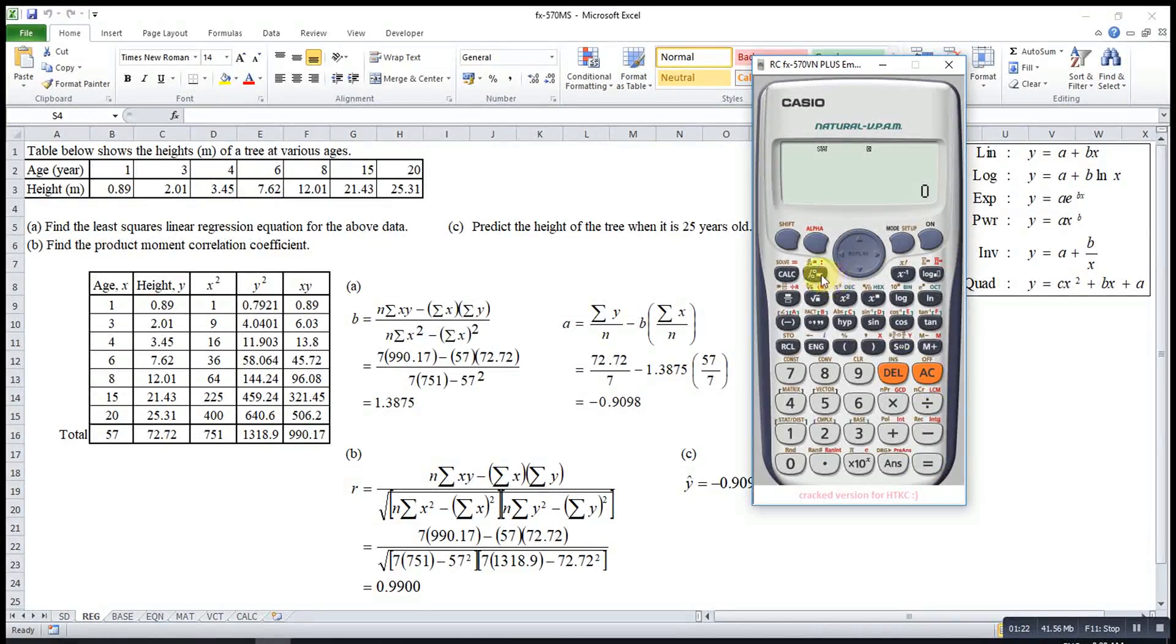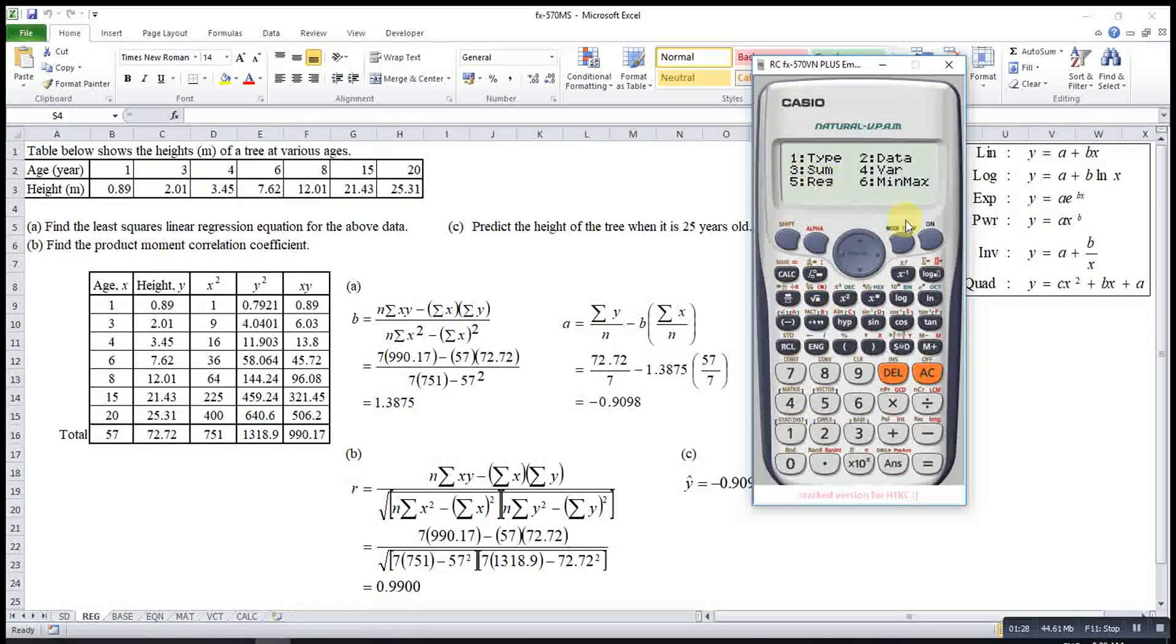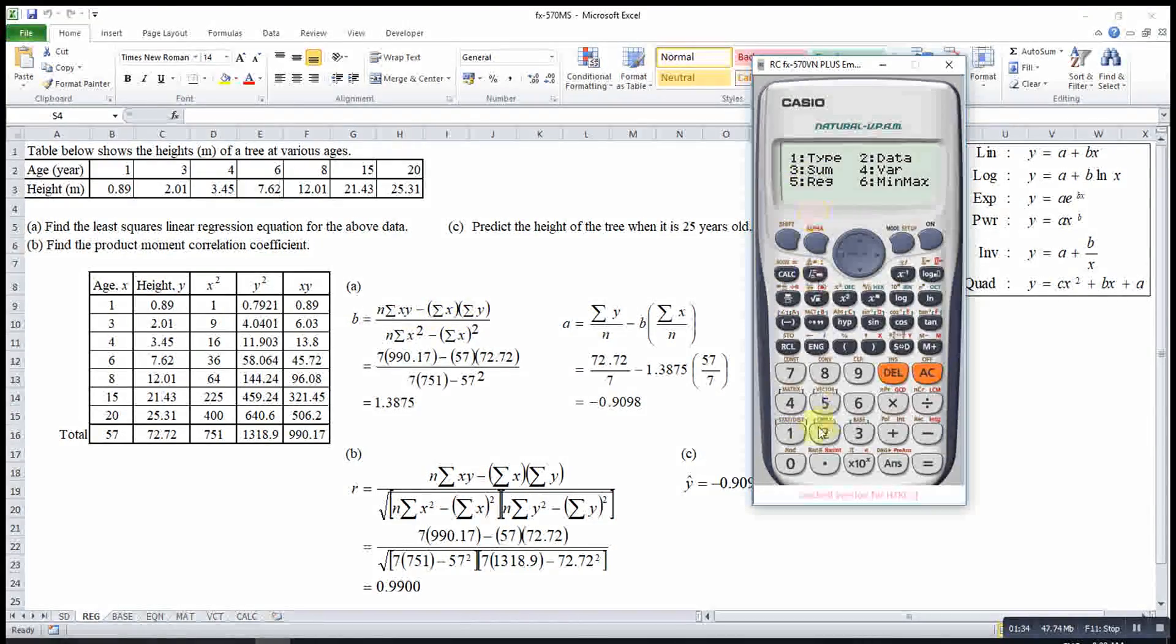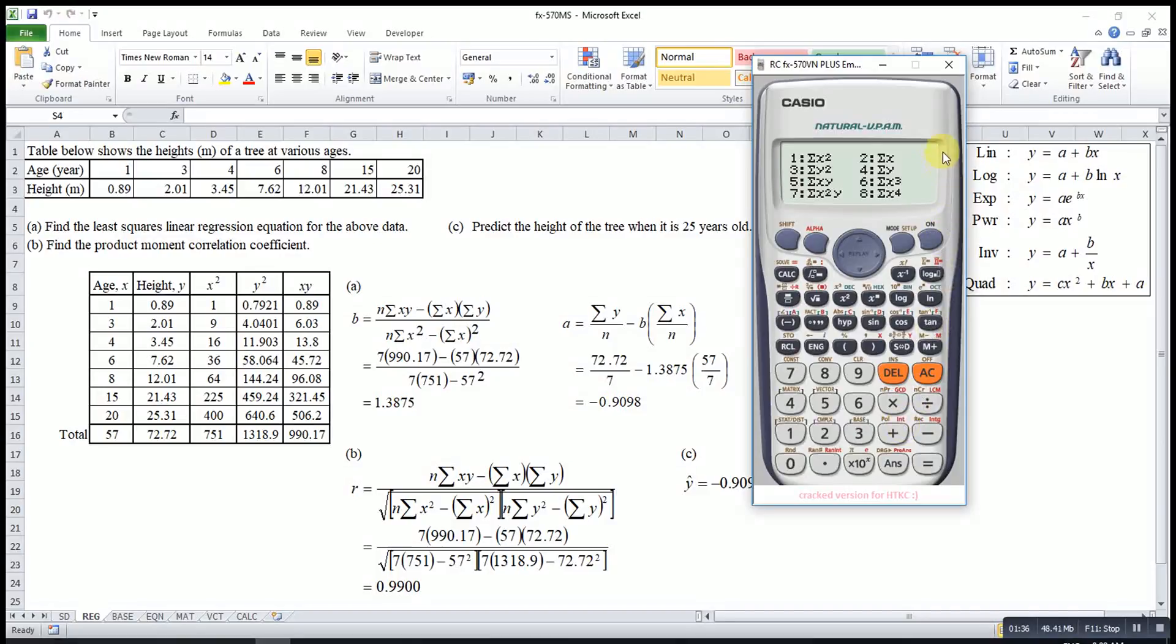Okay, then I skip. Then we press shift step 1. Okay, if let's say I want all the summation, for example, like summation x times y or summation x or summation y, then I choose 3. Okay, then you choose the one that you want, for example, summation xy will be 5. So, I press 5, then it works. So, this one will be the summation xy.